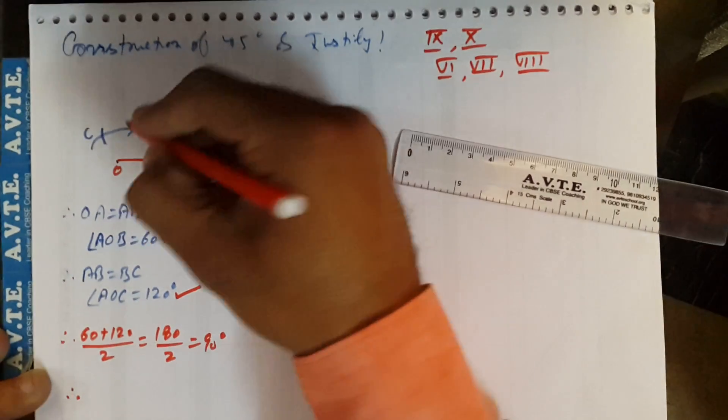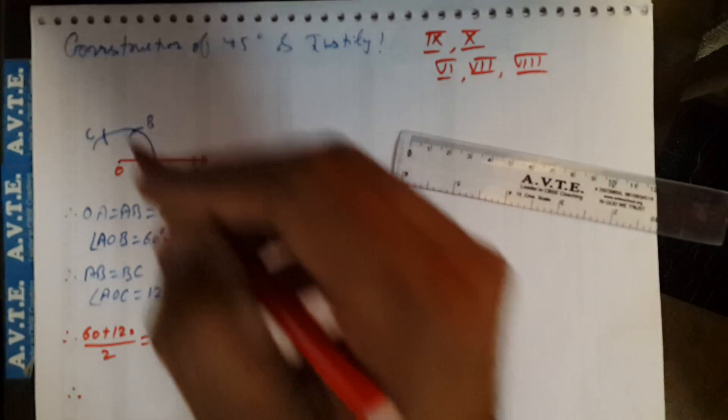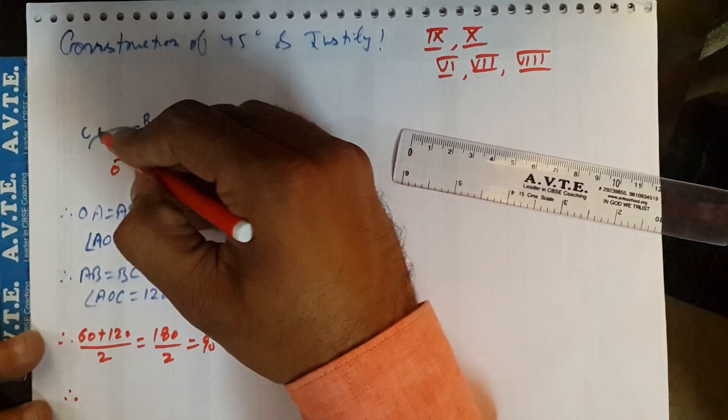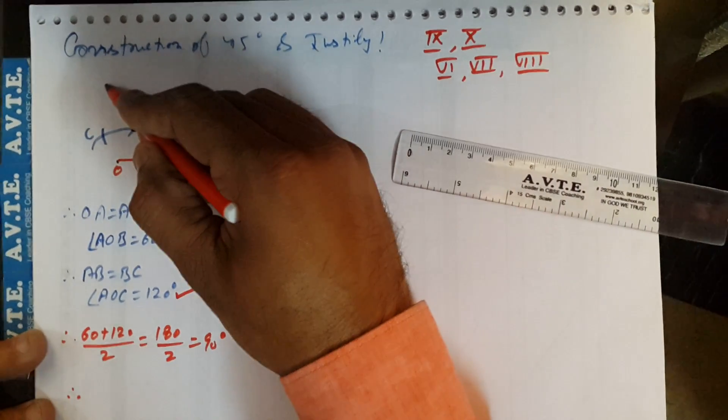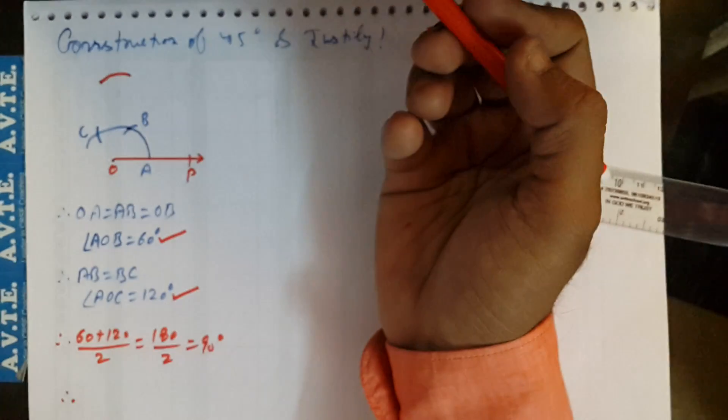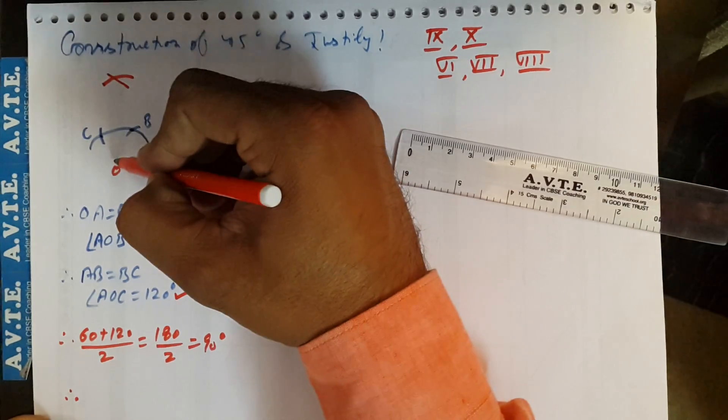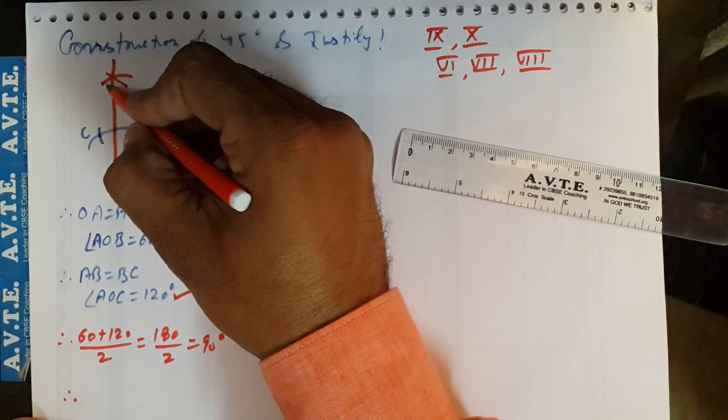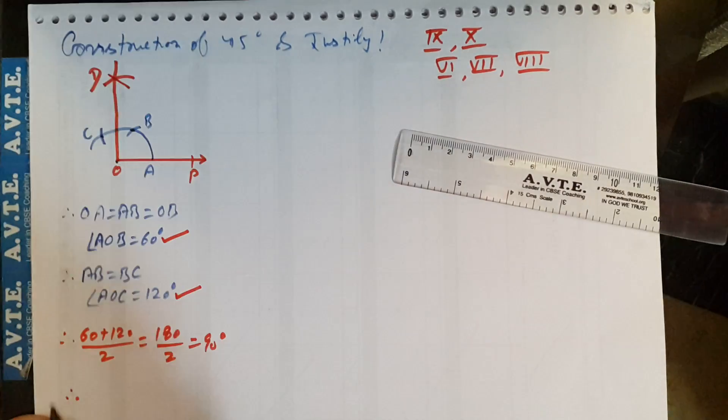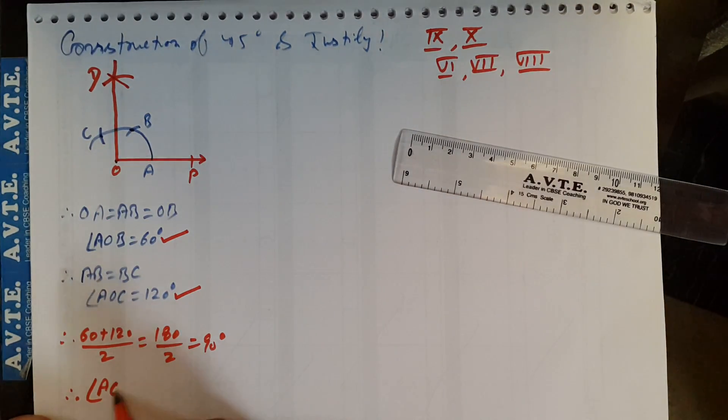Here, you put a compass on B, you cut an arc like BC has radius or you can take more than BC. With the same radius, now you put a compass on C, you get an arc here. When you join them, you mark this point as D. Your angle AOD is 90 degrees.